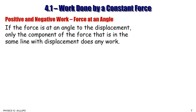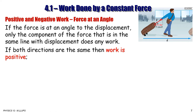Work is a scalar quantity — it has magnitude only, not direction. However, work can have positive, negative, or zero value. If the force is at an angle to displacement, only the component of the force along the same line as displacement does any work; the perpendicular component does zero work. The formula is: W = F·cosθ·Δd, where θ is the angle between force and displacement. You don't need to calculate that component separately — just use F·Δd·cosθ.